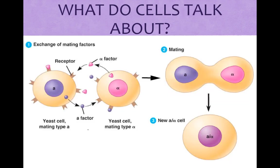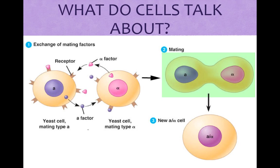What do cells talk about? One topic of cell conversation is sex. The yeast used for making bread, beer, and wine, which is a type of Saccharomycetes, identify their mates by chemical signals. There are two sexes, the A and the Alpha. The A secrete factors, which are chemical signals that bind to receptors on the Alpha. The Alpha secrete factors which bind to receptors on the A's. The binding of these receptors on their partners causes the cells to go towards each other and to fuse.